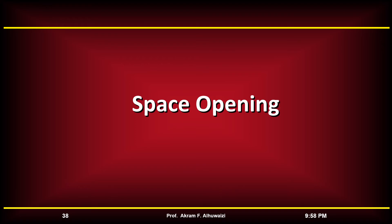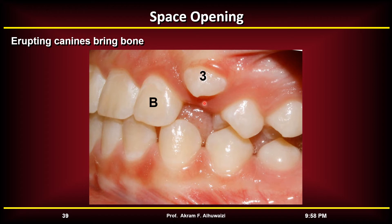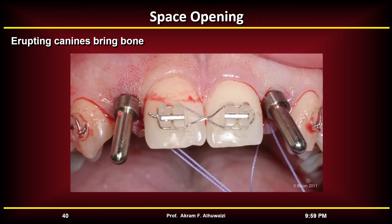When choosing space opening, a clinical decision must be made for a child with missing lateral incisors who has a retained deciduous canine (the 'C'): should you extract it and allow the canine to erupt forward, or leave it and allow normal canine eruption, extracting it when the patient is an adult? Removing it early encourages the canine to move forward, bringing bone with it, so that at a later age you can retract the canine and place an implant — the increased bone from mesial canine eruption is very welcome at implant placement.